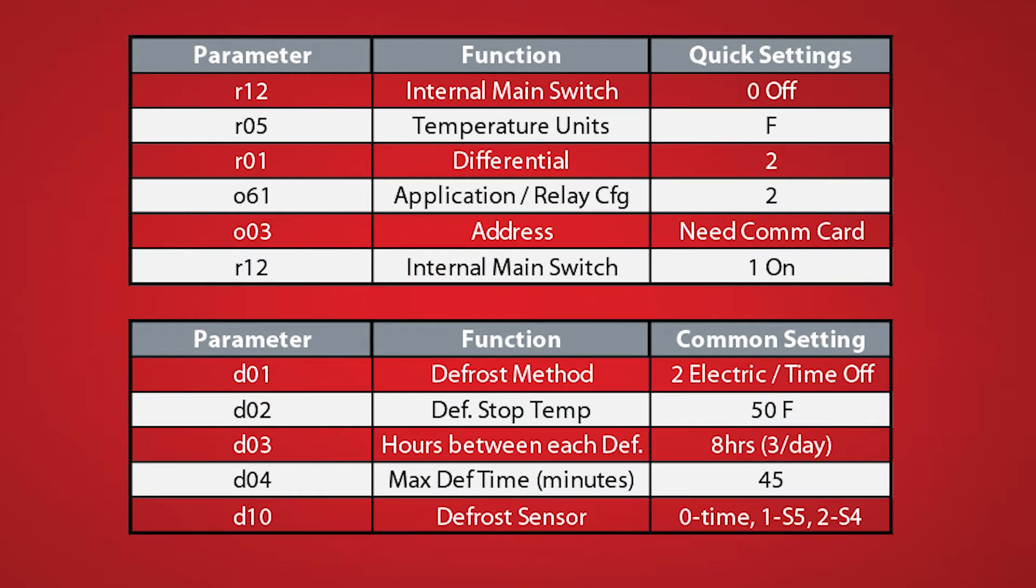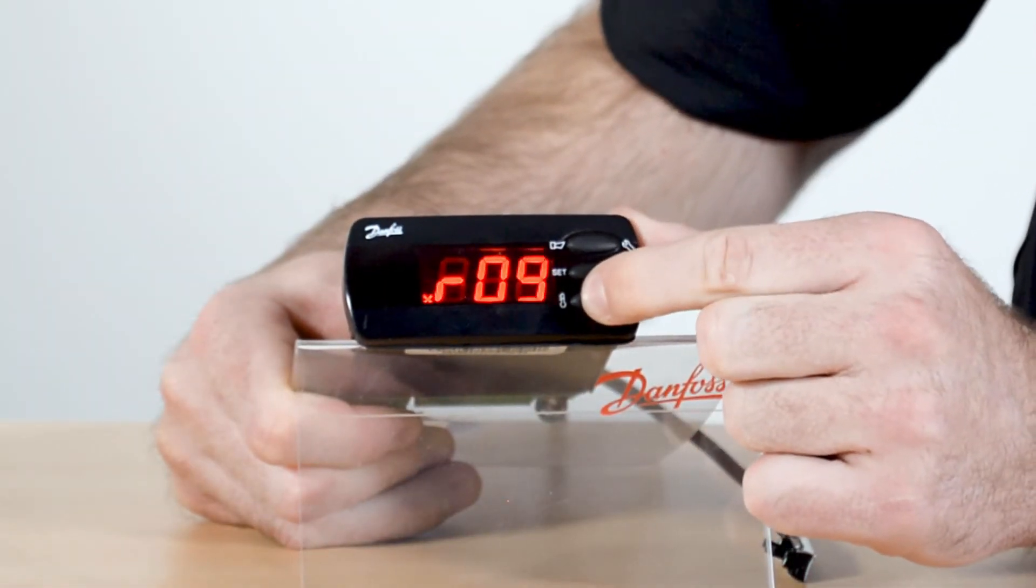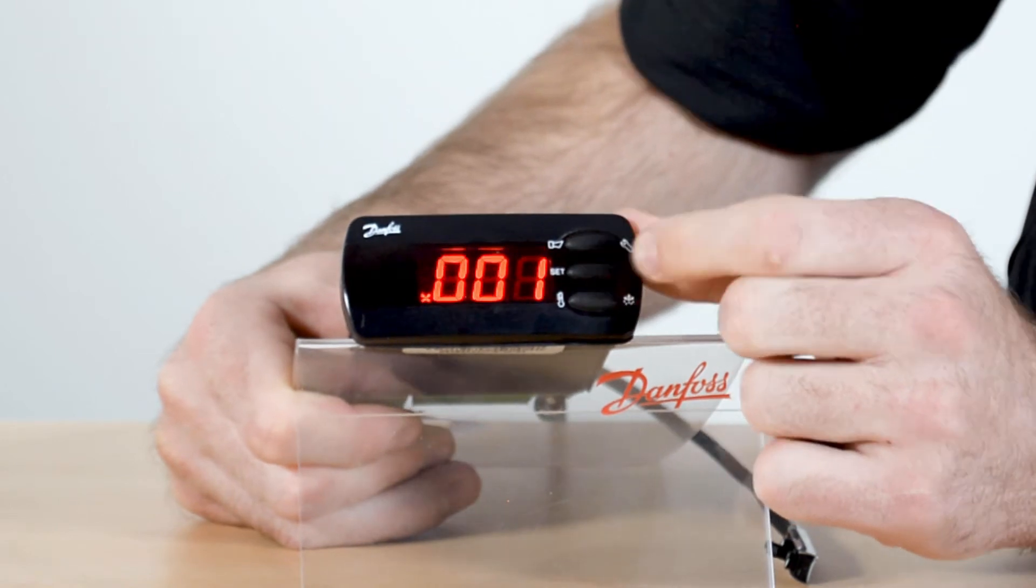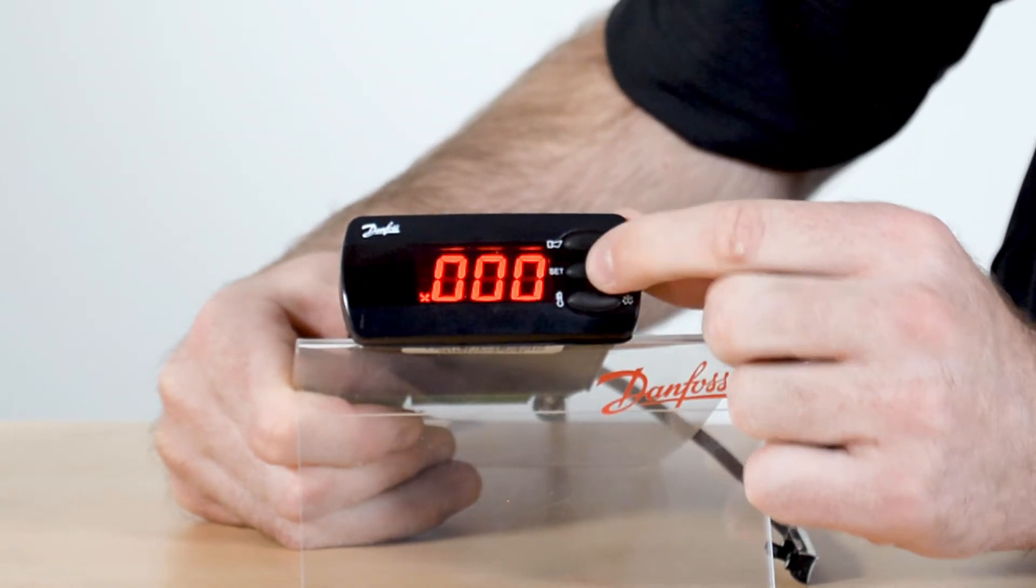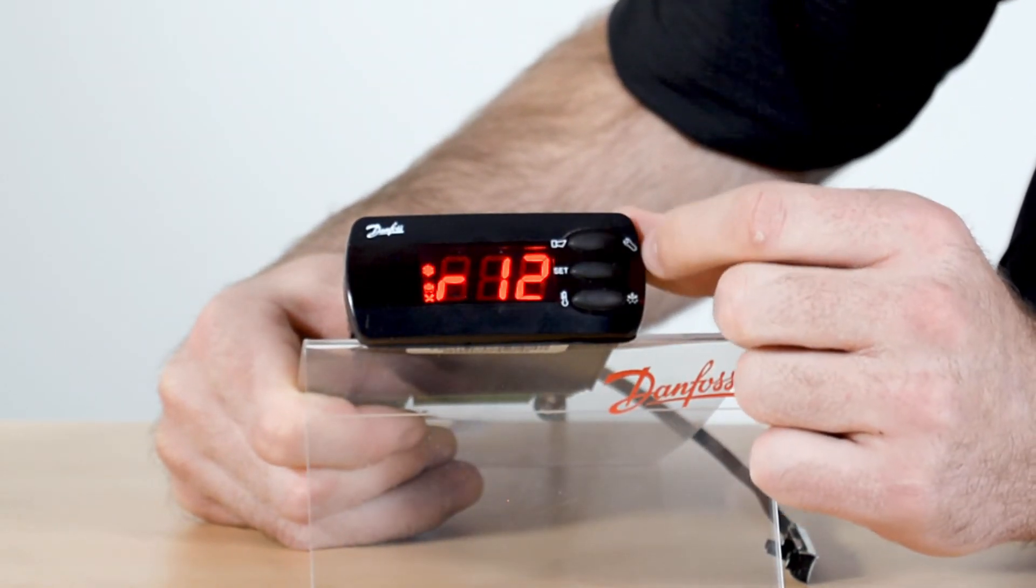For basic programming to get your AKCC 210 set up, you first want to hold the top button for five seconds and this will take us to the R01. First we go to the R12 which is the internal main switch and set that to zero to make major programming changes.